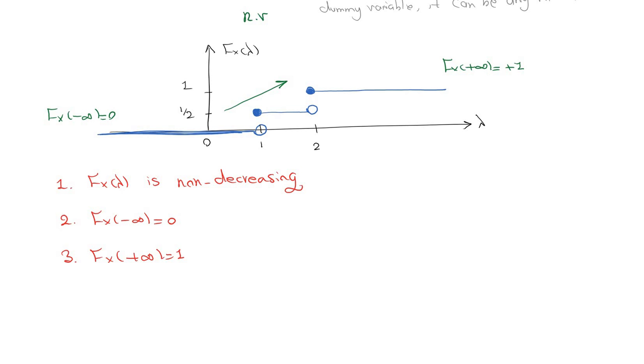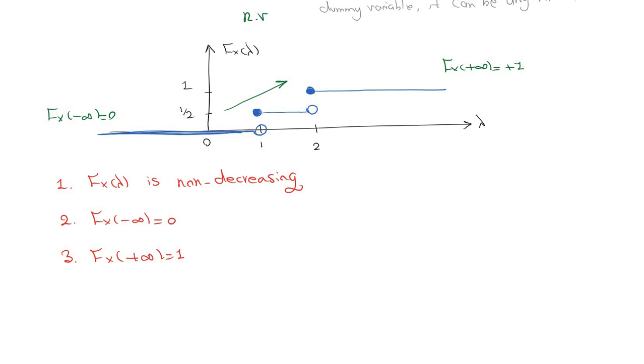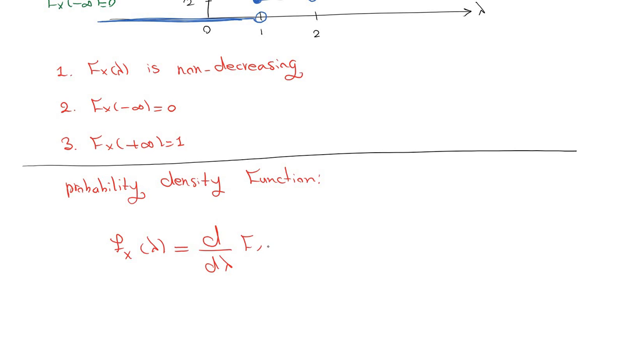The next definition is probability density function. Small f of lambda equals the derivative of the distribution function with respect to lambda.